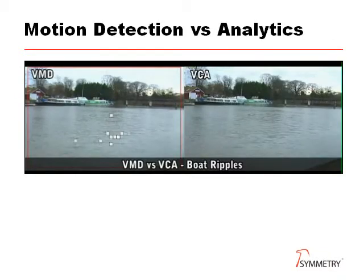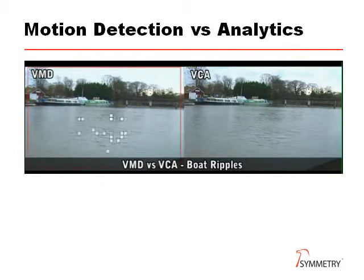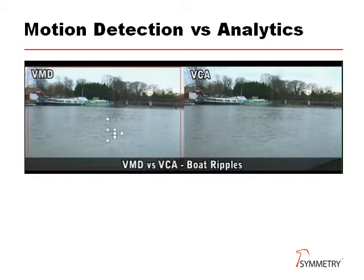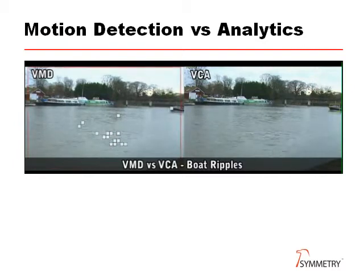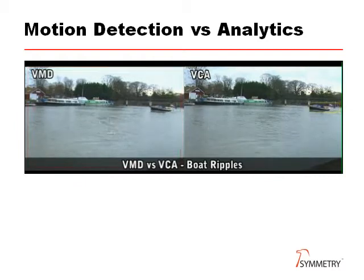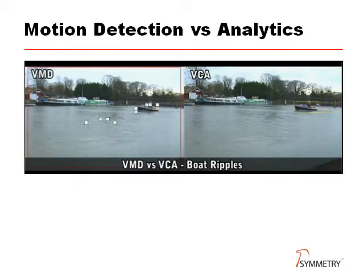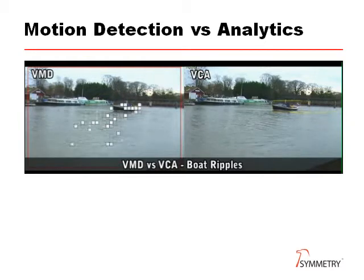This screen shows the difference between video motion detection, VMD, and video content analytics, VCA. The VMD image shows motion in the water as it picks up the ripples, whereas the VCA image locks on to just the target and tracks it across the screen. As can be seen, the boat on the left hand side almost merges into the background noise.